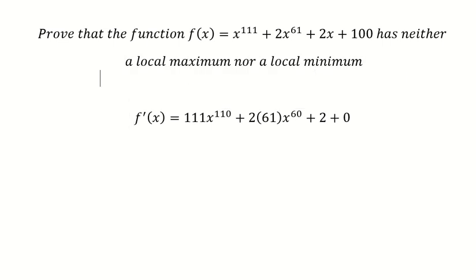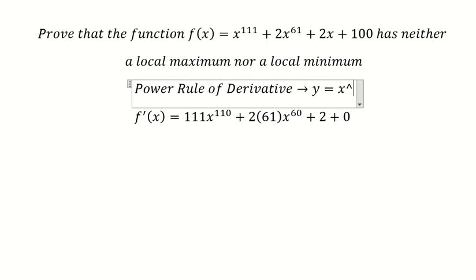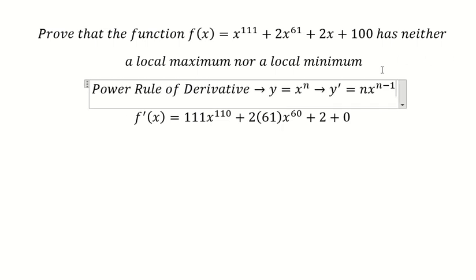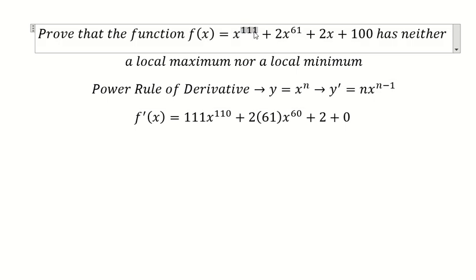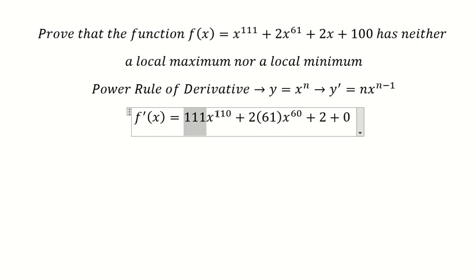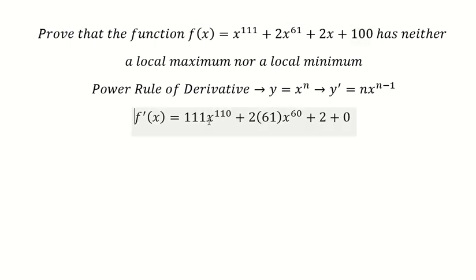This is about the power rule of derivative. So let's say we have this number here. I will put this one here, so that means we have 111 minus 1 which gives us 110. Similar for this one and this one. This one is a constant so you get zero. And now we can simplify.